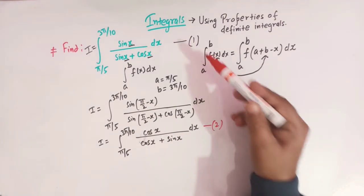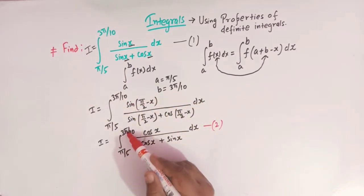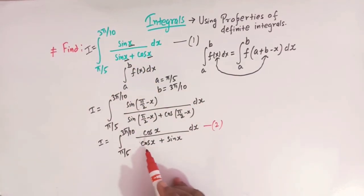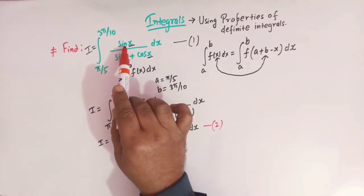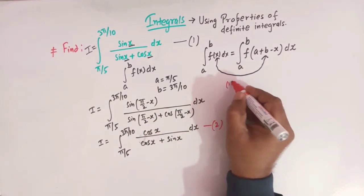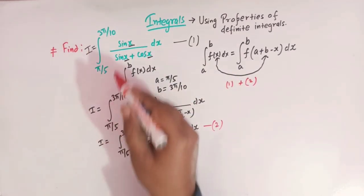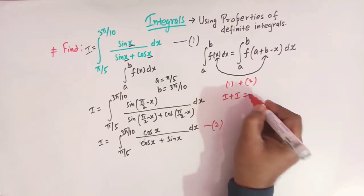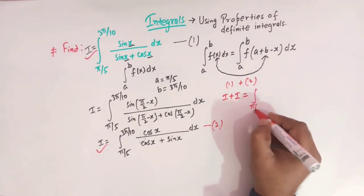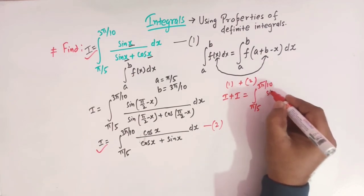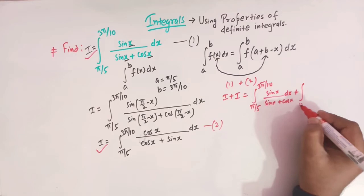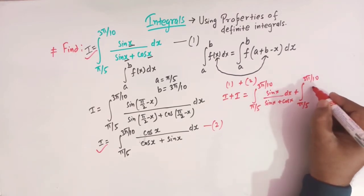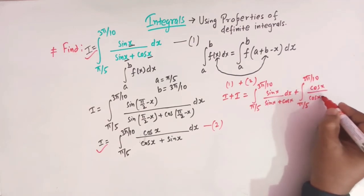Let us call this integral as integral number 2. Now if we look at integral number 1 and integral number 2, we see that the limits remain the same and the denominator is also the same — sin x plus cos x in both cases. The only difference is that in the numerator we have sin x in integral 1 and cos x in integral 2. So we will add these two integrals together.